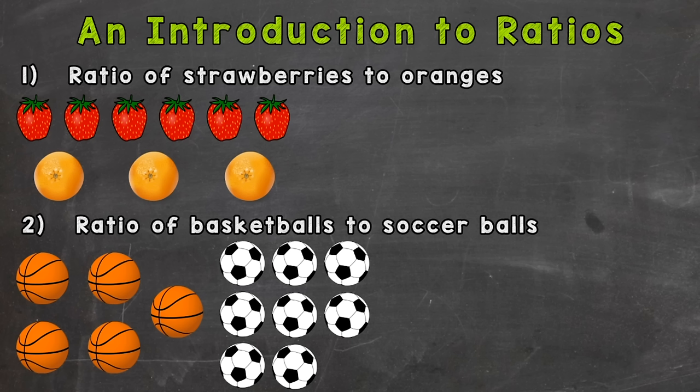How we write out ratios and just talk about what a ratio is. As you can see, there are two problems on your screen. We have the top problem with strawberries and oranges and then the bottom with basketballs and soccer balls. Now when we're talking ratios, a ratio shows the relationship between different amounts. We're going to take a look at the quantity of one thing, the number of something, compared to the number of something else.